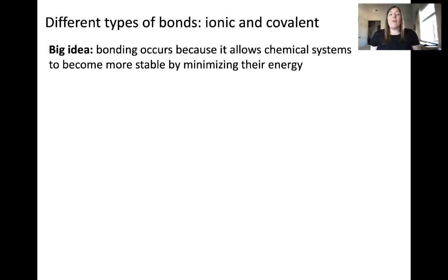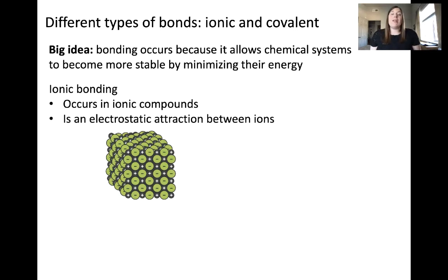There are two primary classes of bond type. One are ionic bonds. These occur within ionic compounds. What an ionic bond is, is an electrostatic attraction between ions.